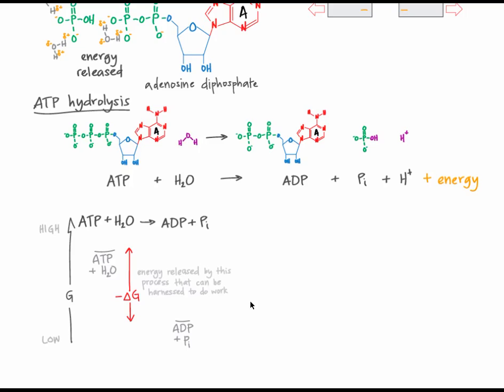Remember that Gibbs free energy tells us about the energy of a molecule that can be used to do work. Our cells use the energy of ATP hydrolysis, breaking ATP into ADP and inorganic phosphate, in order to drive many non-spontaneous processes. The energy released by breaking off a phosphate group can be immediately harnessed for other purposes. This is through coupling reactions, which requires the help of an enzyme.